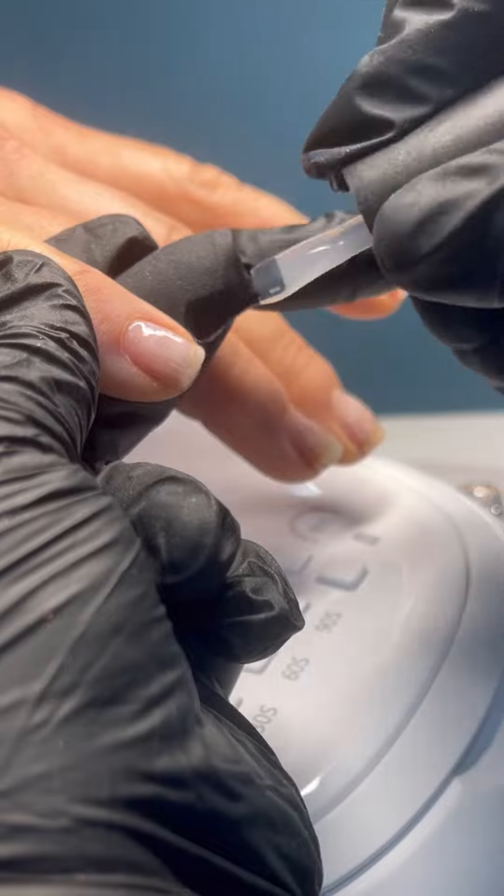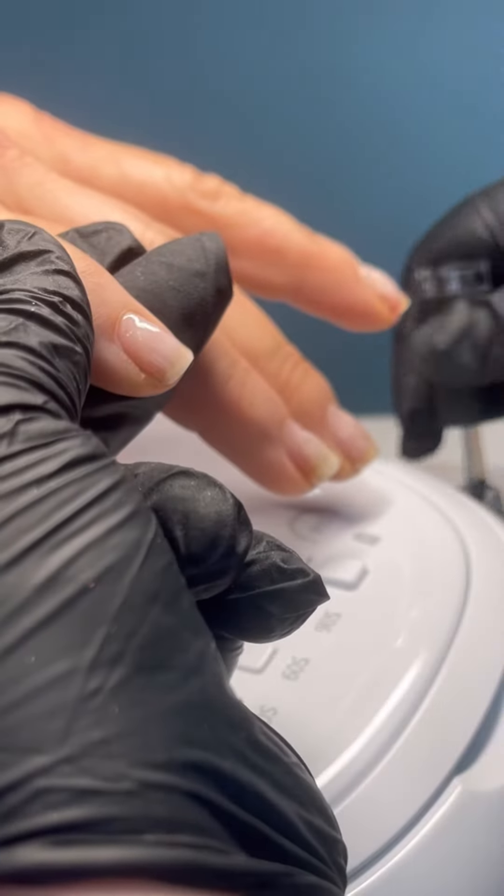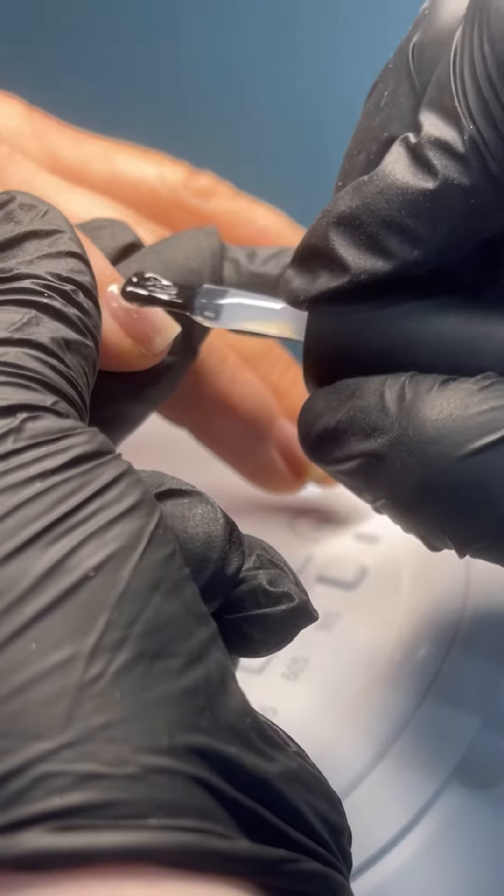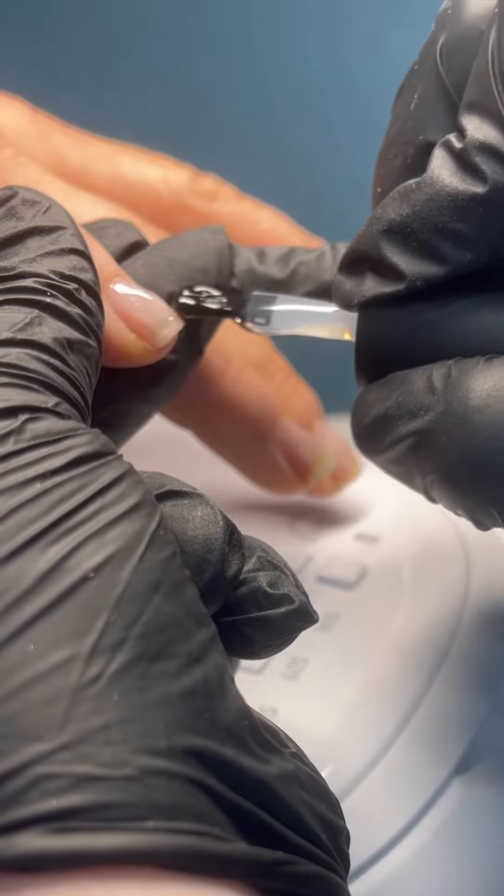And then we're going to go in with our gel. So I went in with the primer, then I went in with one layer of the gel, which is like a slip layer. I don't cure it, and then I go in with a bead and I just float that down.